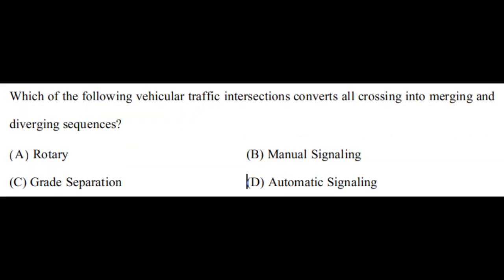Let us see one question from the past GATE paper. Which of the following vehicular traffic intersections converts all crossing into merging and diverging sequences? Option A: rotary. Option B: manual signaling. Option C: grid separation. Option D: automatic signaling. The correct answer is rotary.